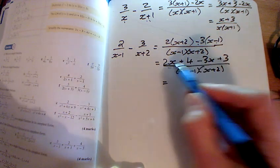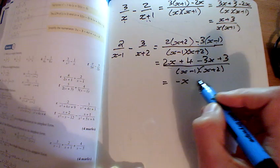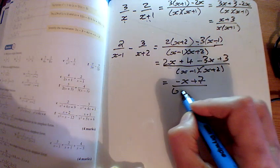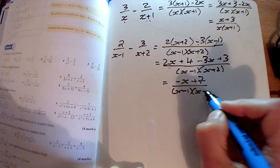And so our answer, what have we got? We've got minus x's and a plus 7 over x minus 1, x plus 2.